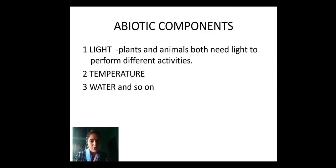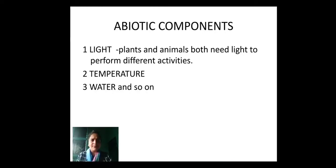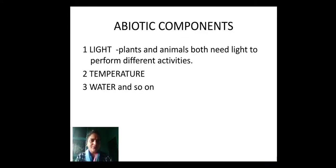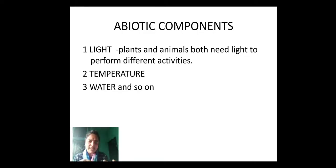Now, both plants and animals need water to perform different activities. Plants need water to perform photosynthesis and other activities. For animals — let's take our own example — since our body is made up of 60 to 70% water, we need water to perform different activities. For example, we need water during digestion, to remove waste products from our body, and to maintain thermal balance. There are other abiotic factors like soil, humidity, and rainfall which influence the life of biotic components — for that, you can refer to your textbook.